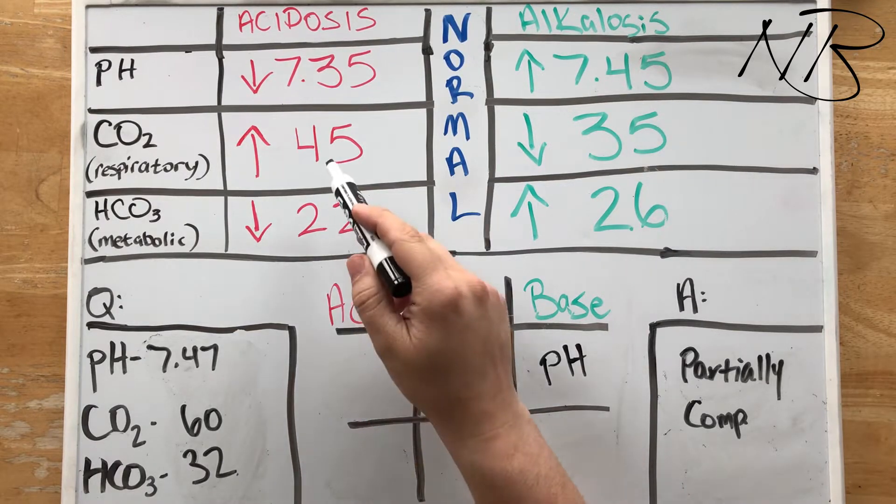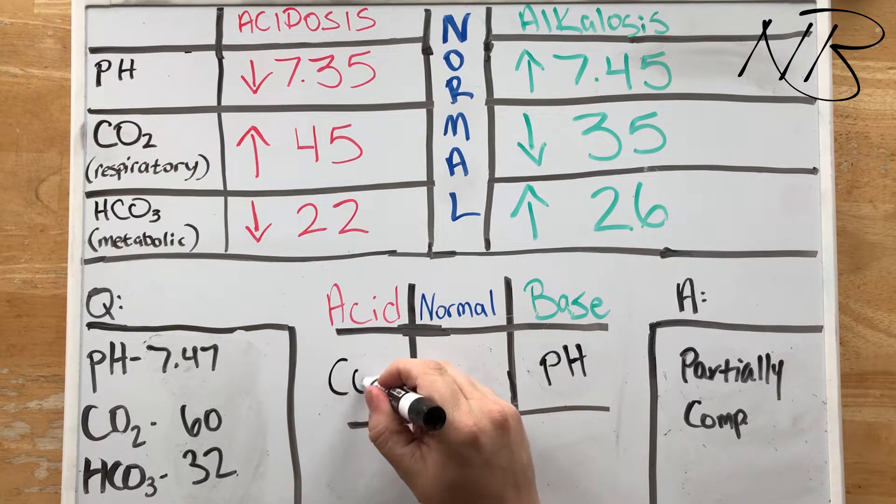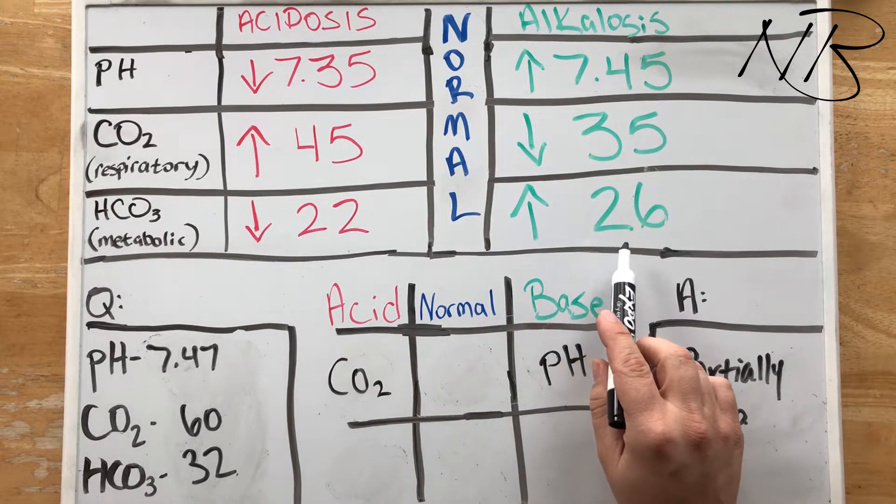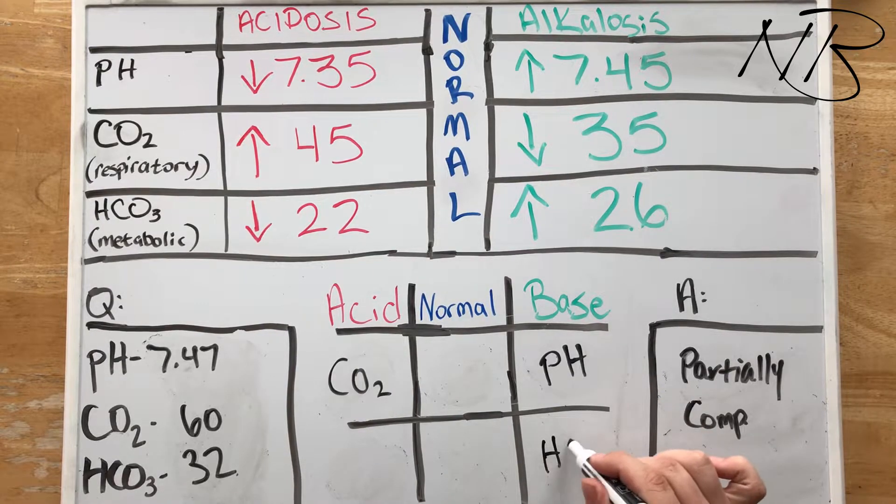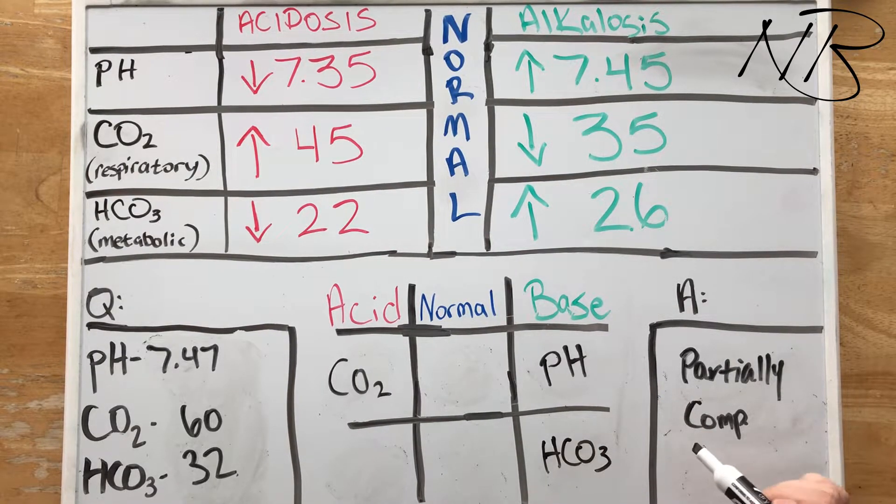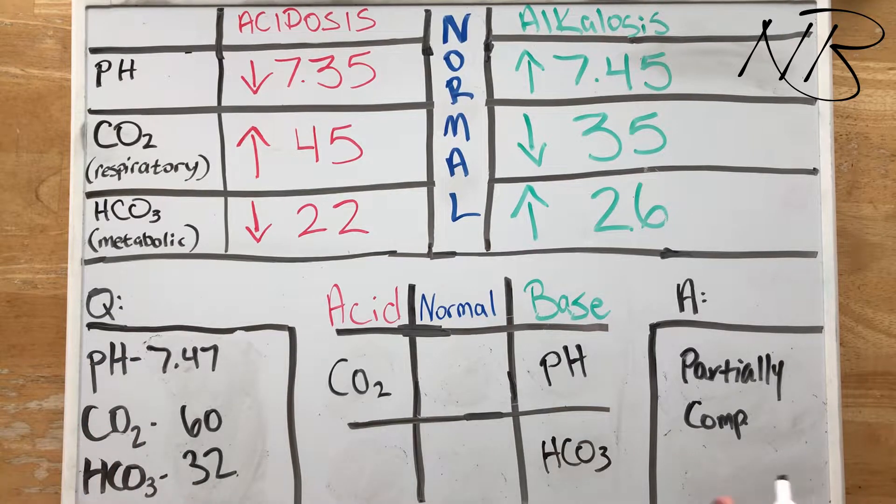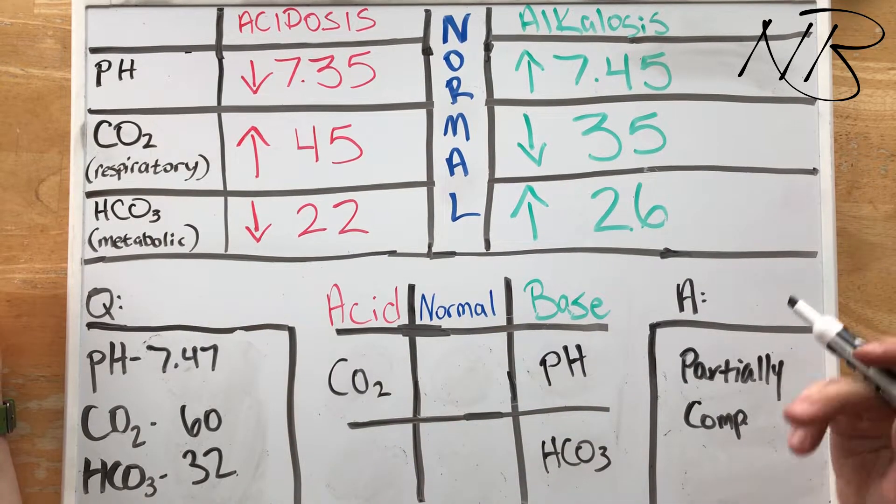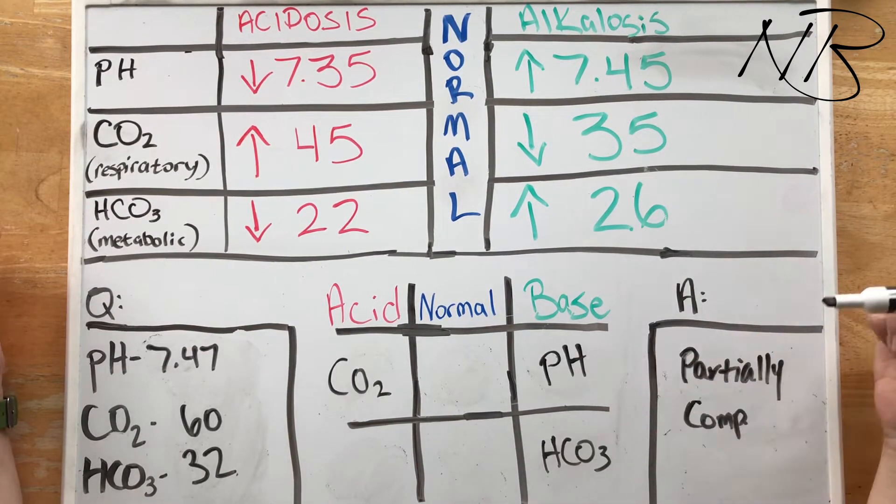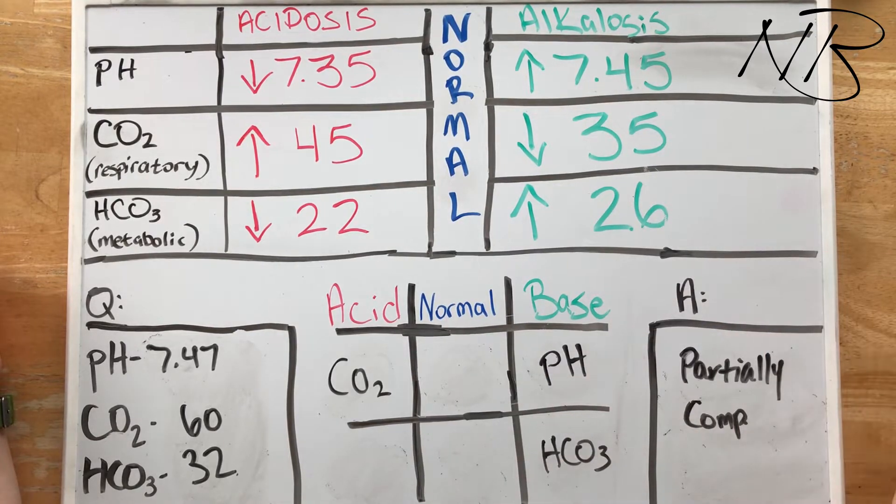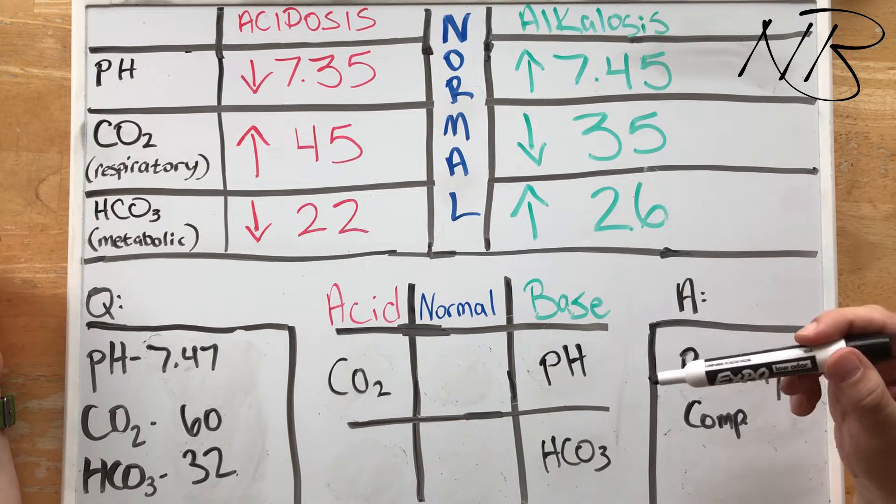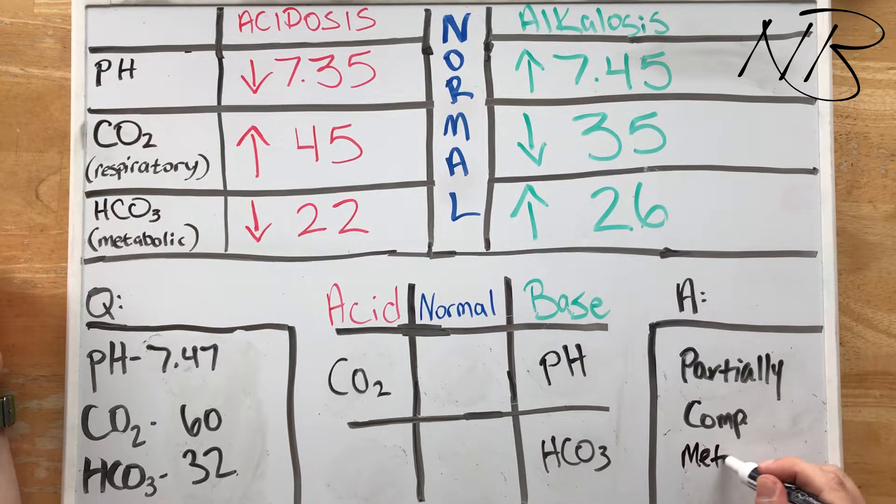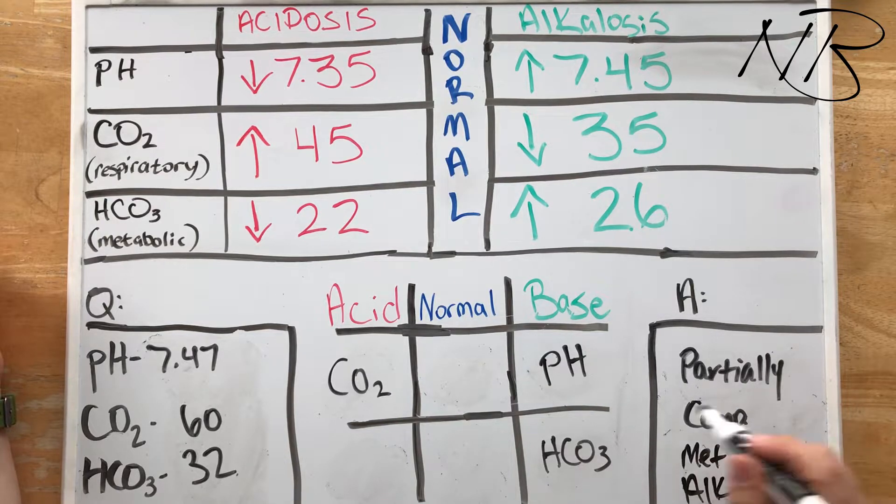As we previously stated, our CO2 is 60. It's going to go in our acid column. Now, our bicarbonate is 32. 32 being above 26, that's going to go in our basic column. Now, a different presentation of a partially compensated arterial blood gas. CO2 and bicarbonate were the same, but as you can see, we now have an entirely different issue. This is no longer a case of respiratory acidosis. What we now have is metabolic alkalosis, partially compensated.